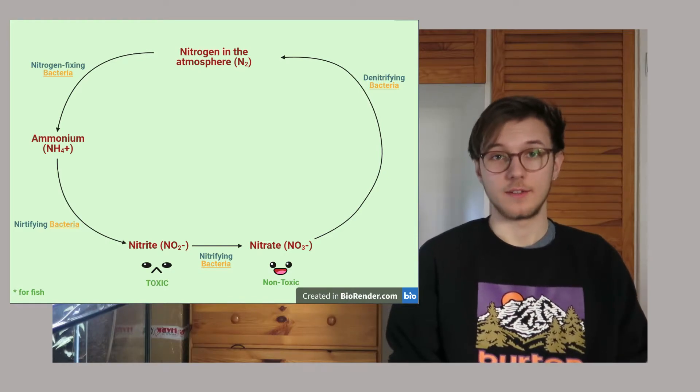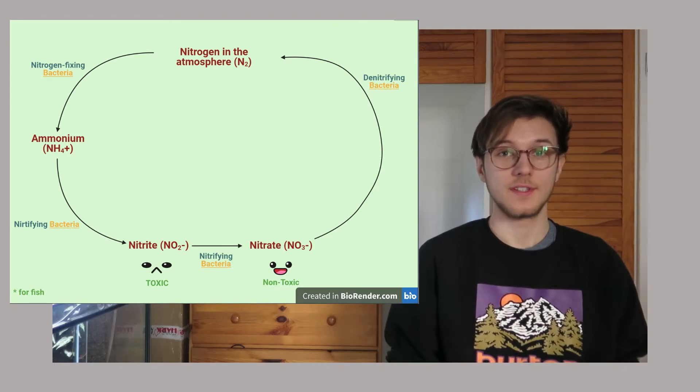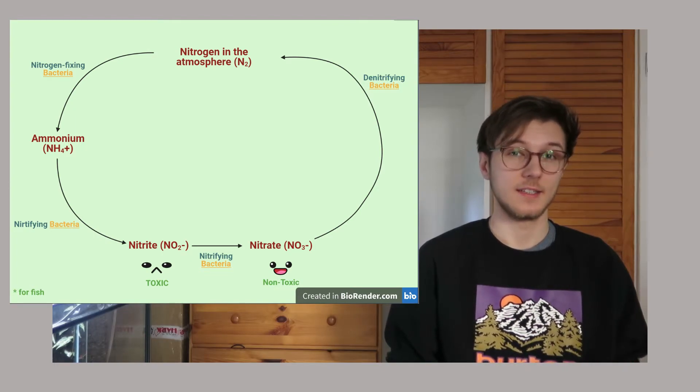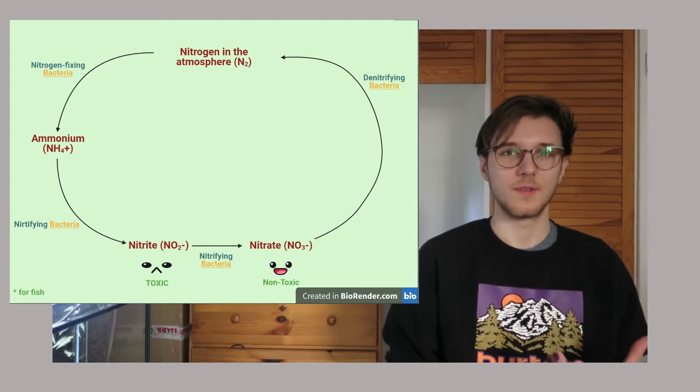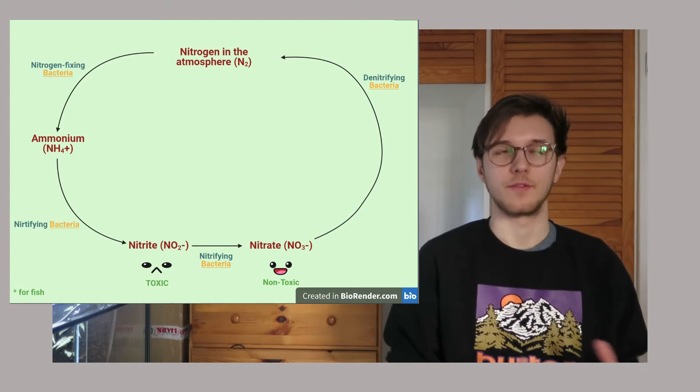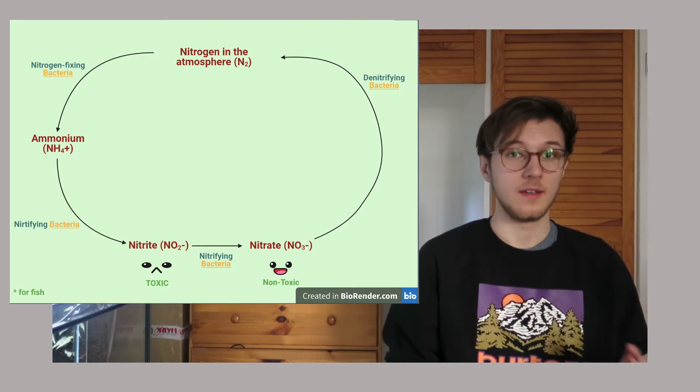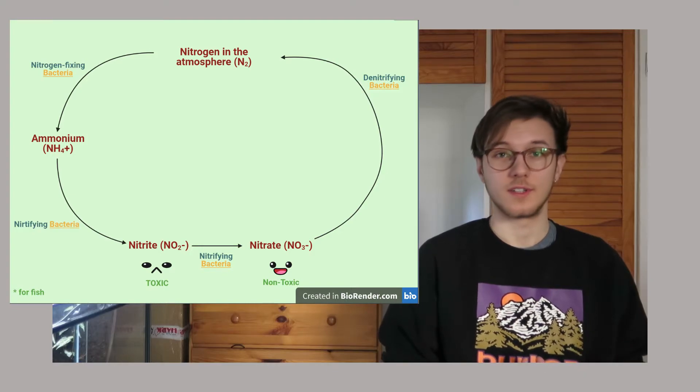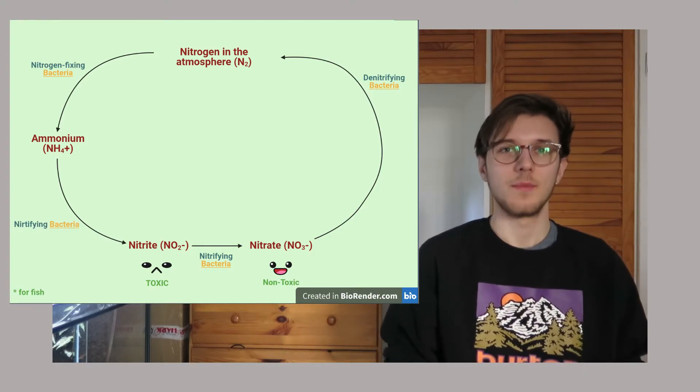But there is a difference between the nitrogen cycle and what you have in your tank at home. The nitrogen cycle occurs everywhere on the planet, in soil of forests, maybe in the ocean and rivers and lakes, also in your garden, and even in your tank. But in your tank it looks more like something like this.